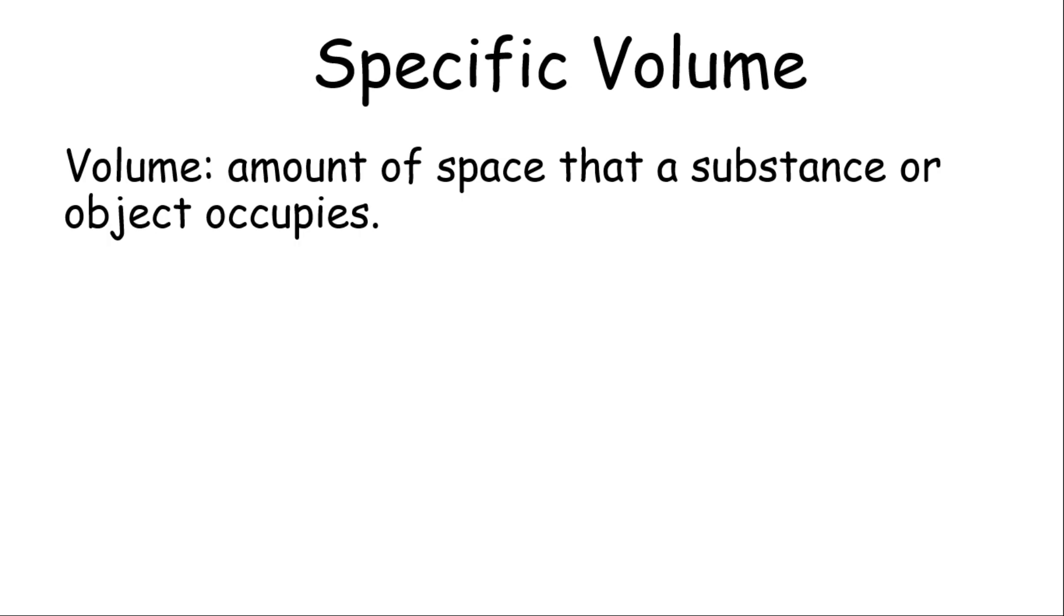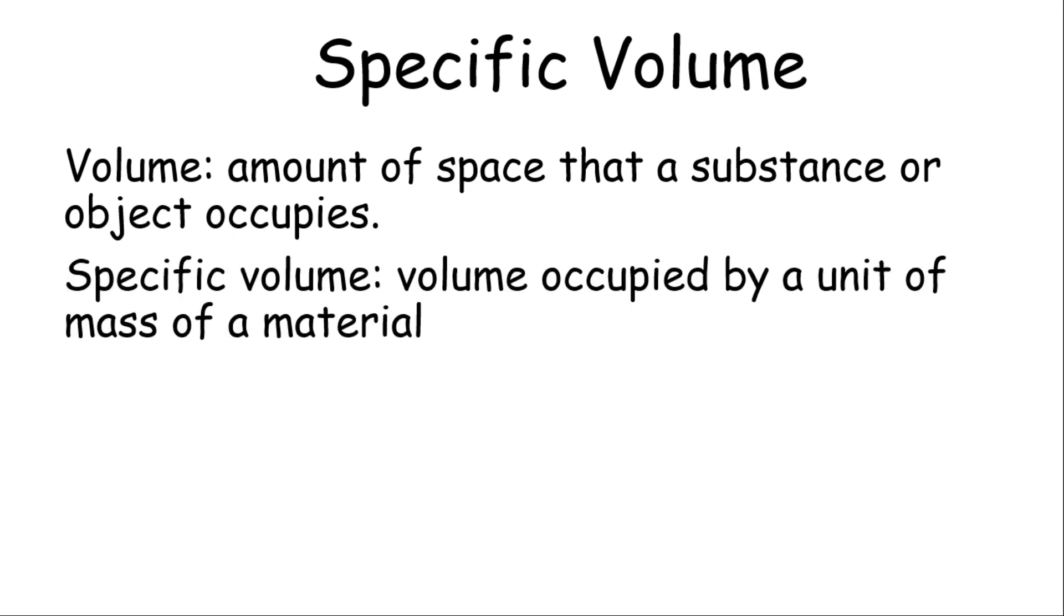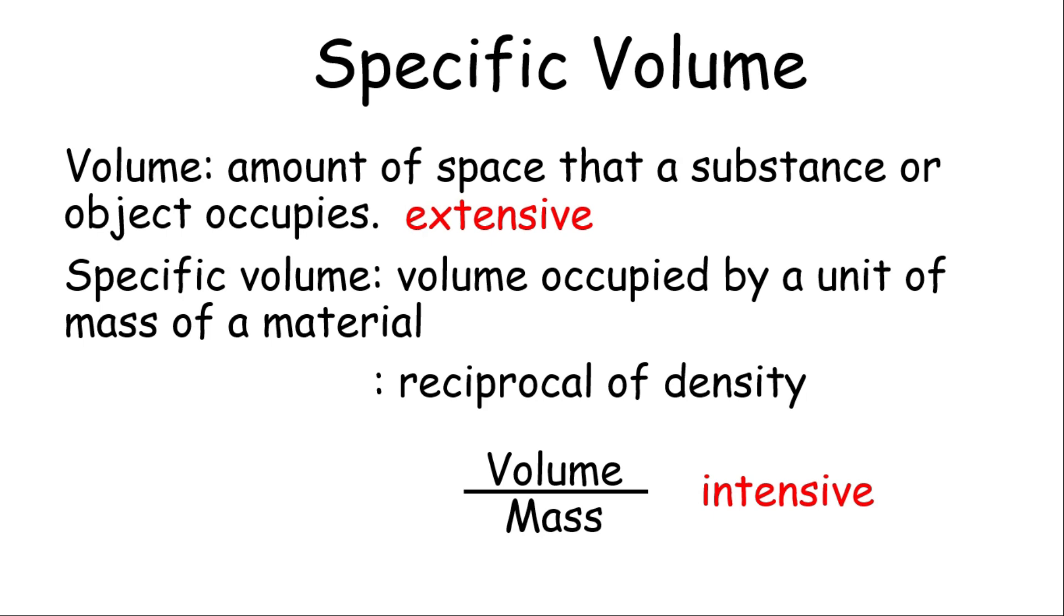So let's go back to specific volume. What is the difference between specific volume and volume? Volume is the amount of space that a substance or object occupies. On the other hand, specific volume is the volume occupied by a unit of mass of a material. So specific volume is the reciprocal of density. The formula is volume over mass. Again, density is intensive, so this one is an intensive property too.